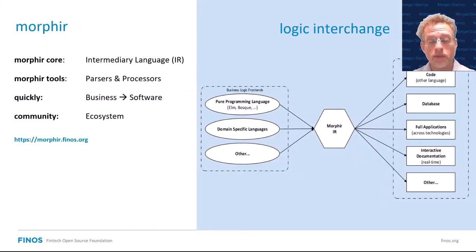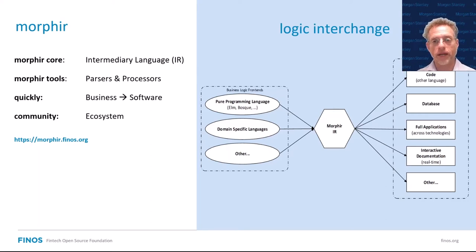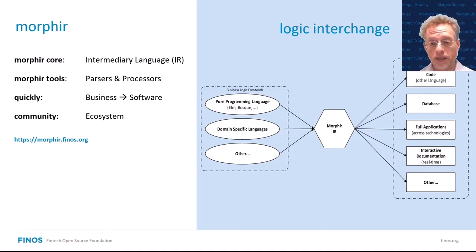So at its core, Morpher is a set of tools aimed at logic interchange. What that means is that we can define a set of logic, put it into a data format — in this case the Morpher intermediary language or IR. And once it's in a data format, we can do all kinds of things with it, just like any other data. We can use that format to generate code that runs in different runtime contexts, or generate configuration and setup to the database. We can generate full applications — not just the code, but everything else that makes an application, which is what we're really talking about in the enterprise.